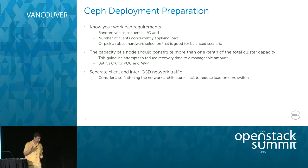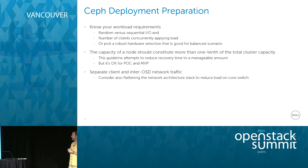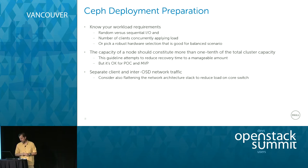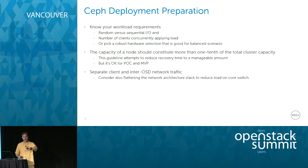One guideline from our colleagues at Red Hat is that when going into production, one node should be less than one-tenth of the total capacity. That's important so that your recovery actually finishes. It's okay for POCs to have a small configuration. As a best practice, Ceph clients talk to Ceph and the monitors on one network, and the OSDs talk to each other for replication on a separate network.